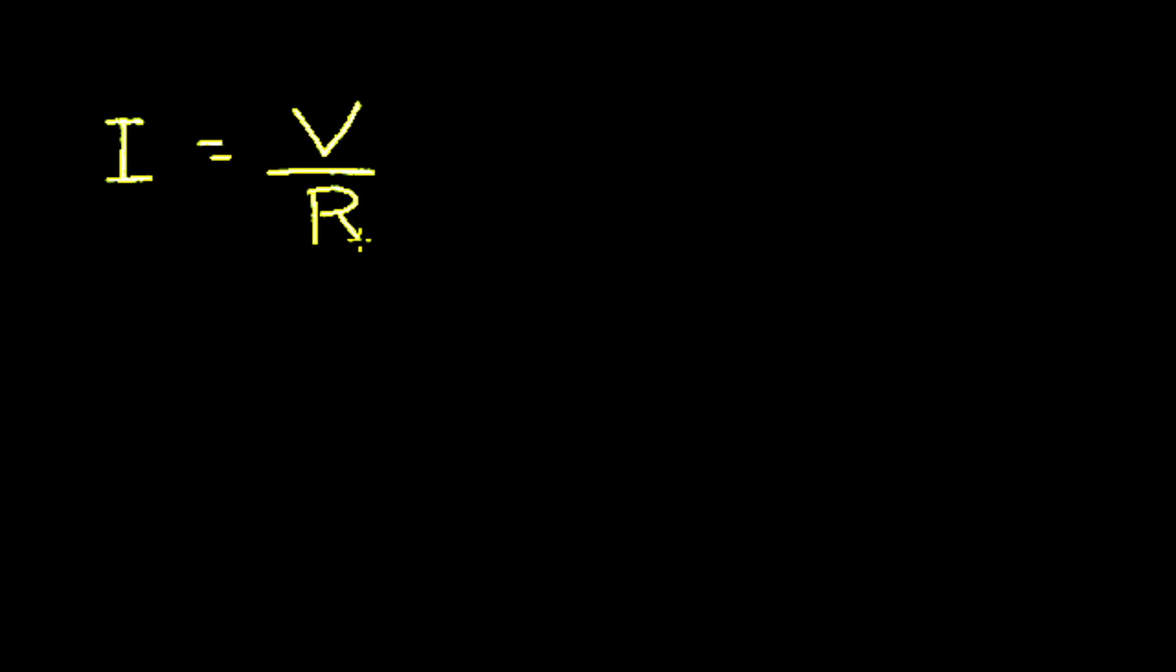Now we can represent Ohm's law in terms of voltage. Let's multiply both sides by resistance and our R's cancel, we're left with voltage is equal to current times resistance.